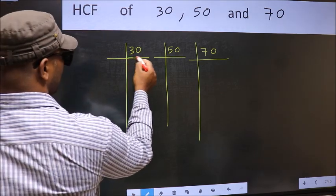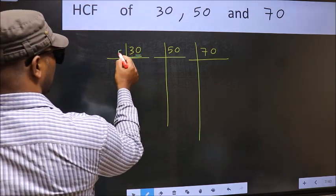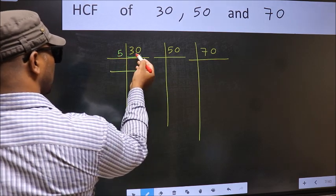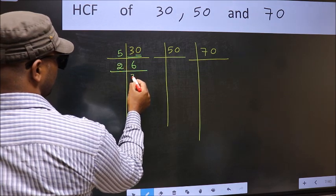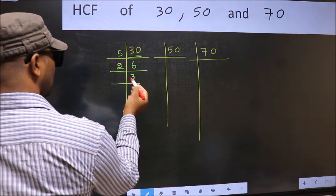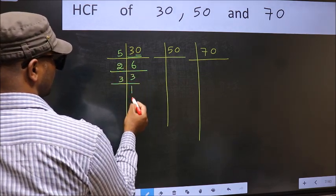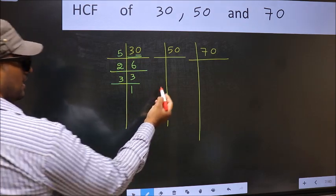Now here last digit 0, so take 5. When do we get 30 in 5 table? 5 times 6 is 30. Now 6 is 2 times 3 is 6. Now 3 is a prime number, so 3 times 1 is 3. Now the other number.